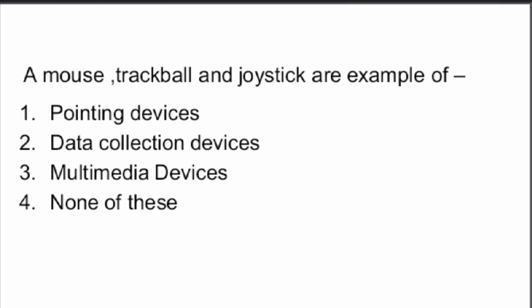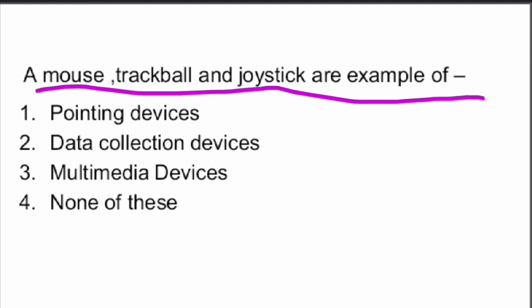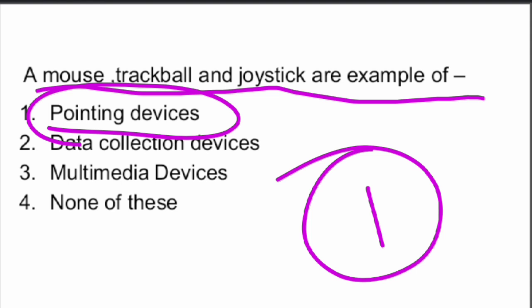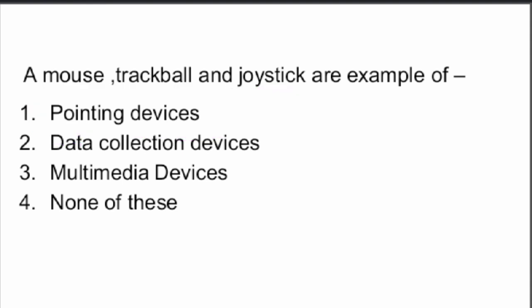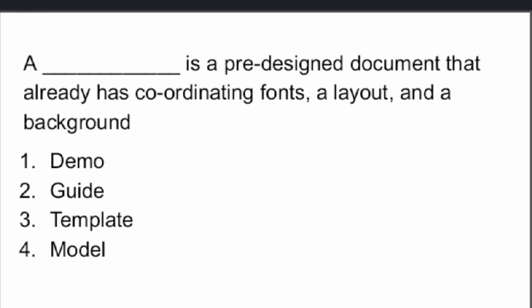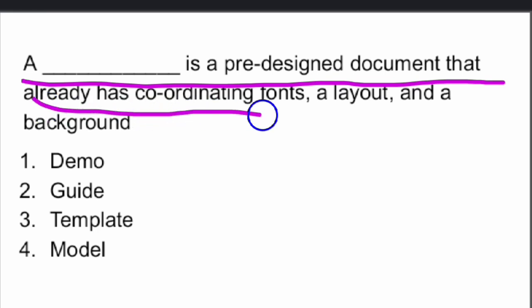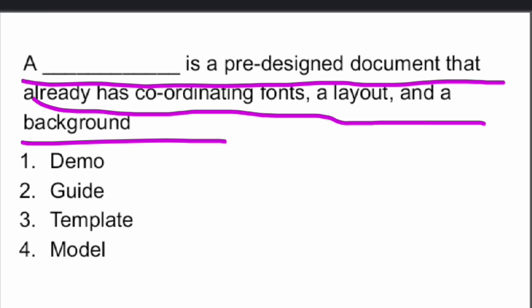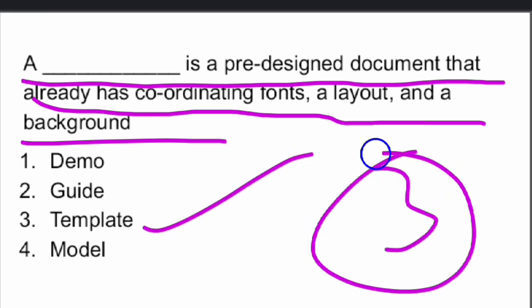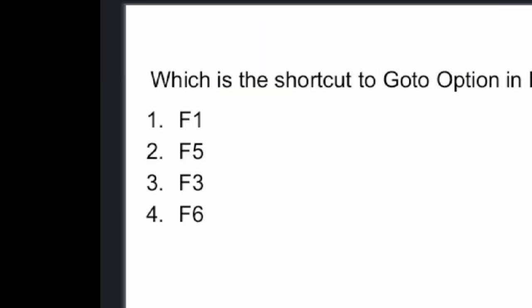A mouse, trackball, and joystick are examples of pointing devices. A pre-designed document that already has coordinating fonts, a layout, and a background is called a template.